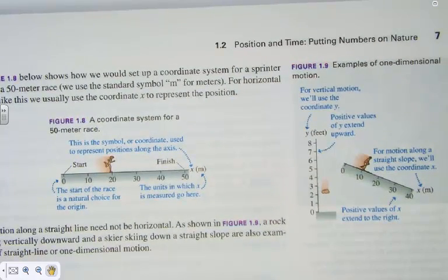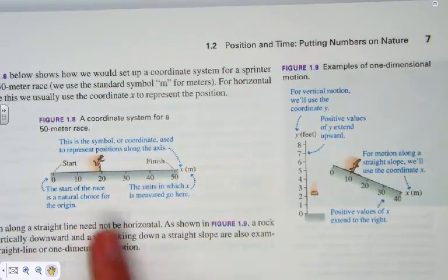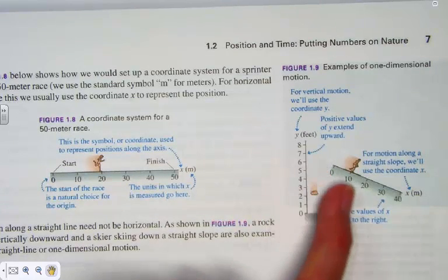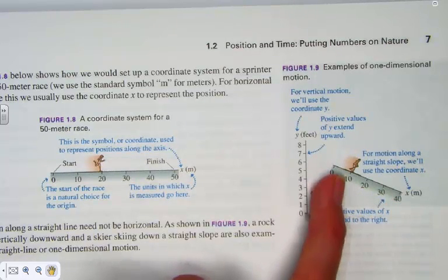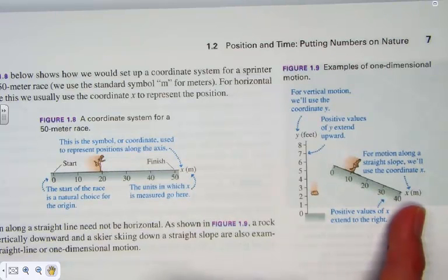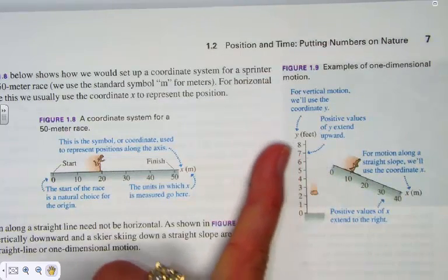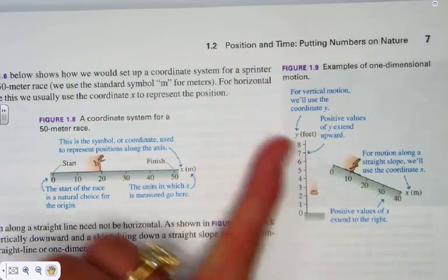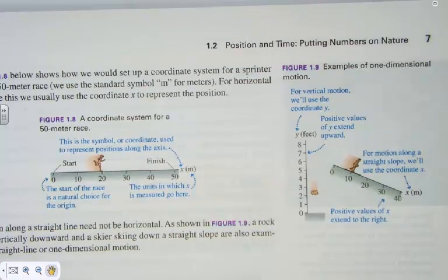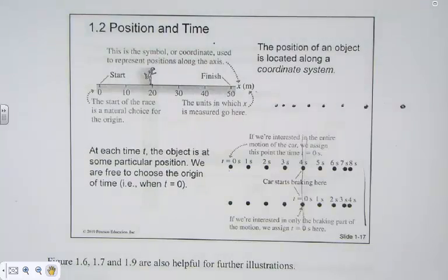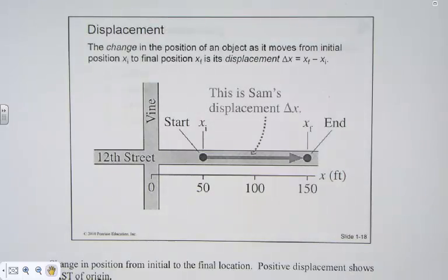Yet another example of just a one-dimensional motion diagram. This is one we studied from the PowerPoint. Here's a second example where we have a skier going down a hill. We can see that they'd be accelerating due to gravity. The x-axis, the origin, is given the distance of meters. Positive values of x extend to the right. Negative values of x extend to the left, which in this particular case would be upward, up the slope. And the positive values would be going down the slope. So just getting a feel for the different ways we represent position and time using motion diagrams and a coordinate system.